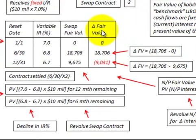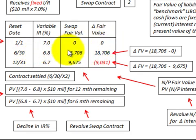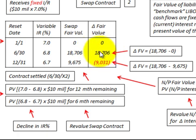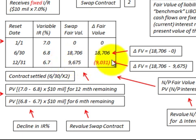Now we determine the change in fair value between periods. At the start date, there is no fair value on this contract — it's zero. At June 30th, we take the $18,706 and compare it with the zero amount on January 1st, giving a change in fair value of $18,706. Then at December 31st, the change in fair value is $18,706 minus $9,675, resulting in a change of $9,031 — so it went down by $9,031.